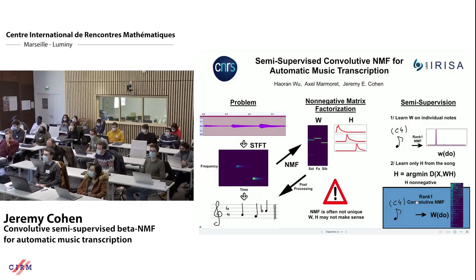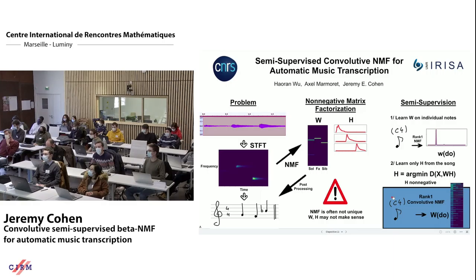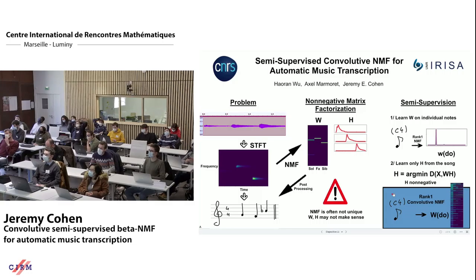You take this STFT matrix and try to write it as a product of two non-negative matrices, W and H. Morally, W should represent the frequency templates for notes and H should be the time activations. You can then post-process H and W, estimate frequencies in W and activations in H, and obtain a tentative music sheet. The problem is that NMF itself is not always unique — it is often non-unique — meaning W and H may not make sense. This can be seen as a generalization of PCA.